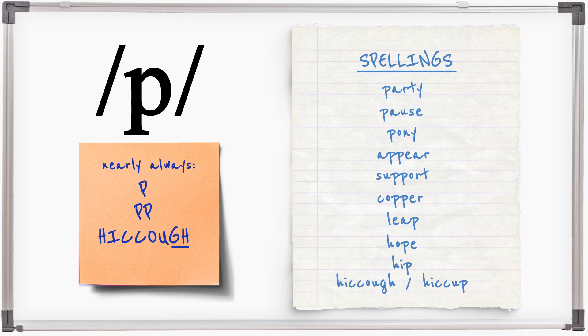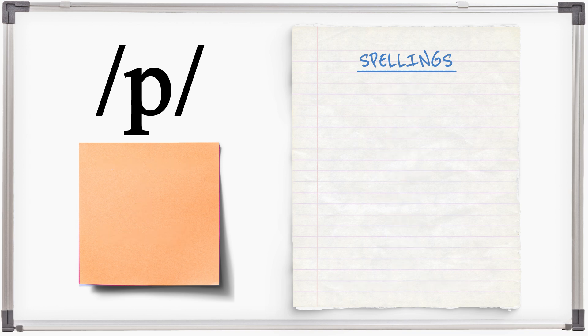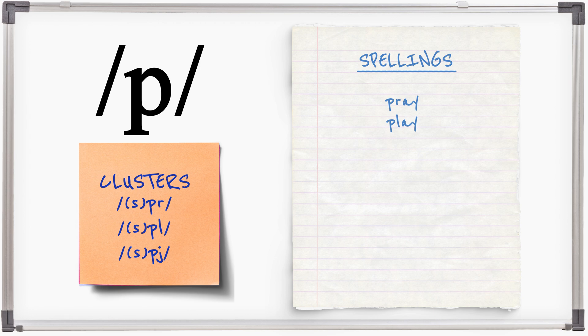P also appears in clusters: pray, play, pew, pure, spain, spruce, spleen, spurious.